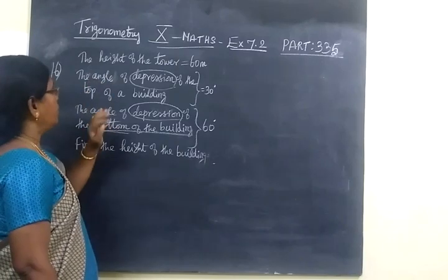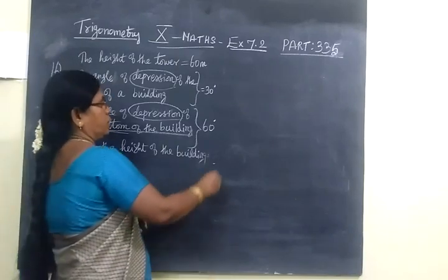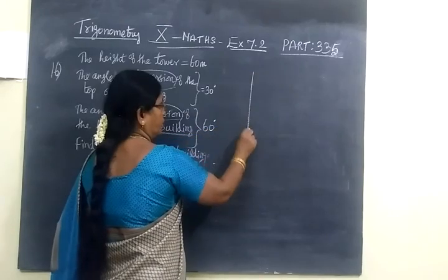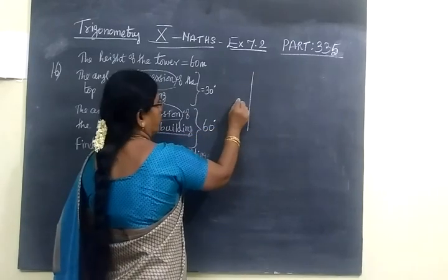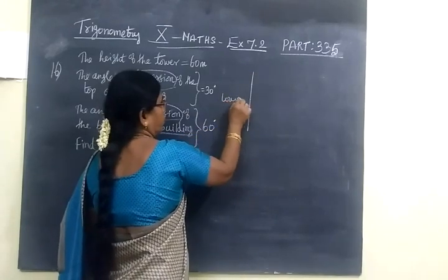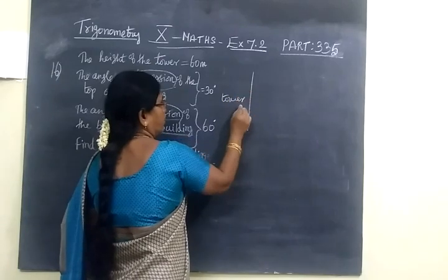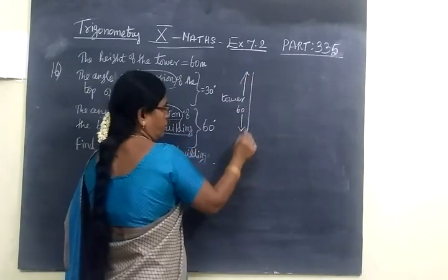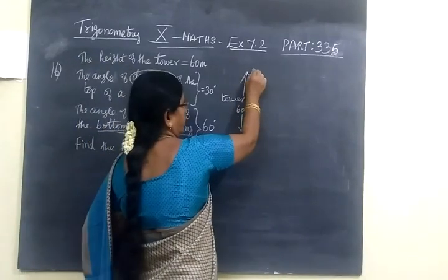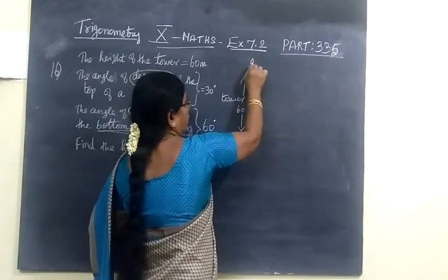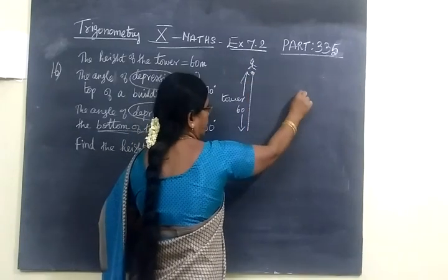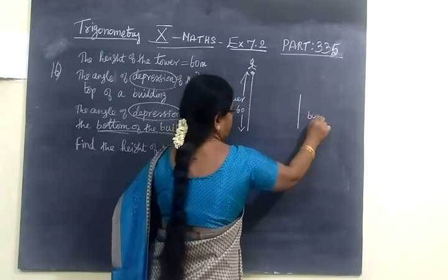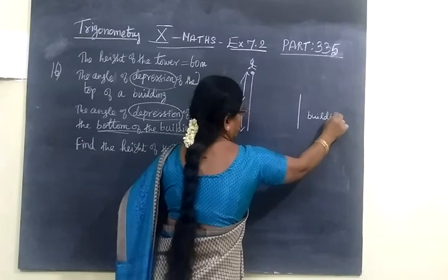The angle of depression of the top of a building. Since it is given depression, this is height of the tower. This is tower. The height of the tower is 16 meters. A man is sitting here and looking at the top of a building. This is building level. This is building.